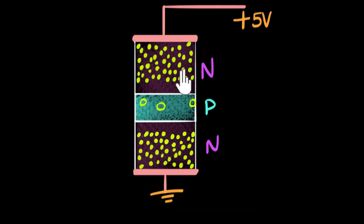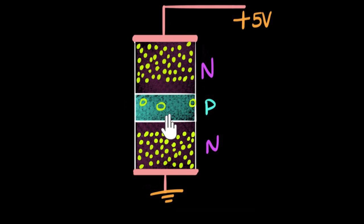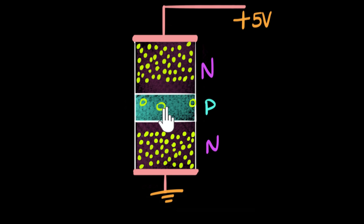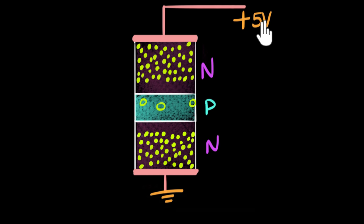Can the electrons from this region flow into the P region? The answer is no. Remember that at every PN junction there is a depletion region which acts like a barrier for the flow of majority charge carriers. The electrons are the majority here; they want to flow due to diffusion, but the barrier prevents them. As a result, there will be no current in the circuit — regardless of whether you put 10 volts or 15 volts, you can't expect any current.